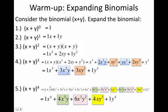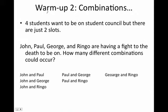Please do make the effort to write these in your notes. This was the first objective — expanding binomials. Warm-up number two is going to deal with what we call combinations. There are two things in statistics that are closely related: combinations and permutations. We're going to deal with the idea that, say, there are four students wanting to be on student council and there are just two slots. Let's say you're one of these four students — you're John — and you want to figure out the probability that you're going to be on the student council.